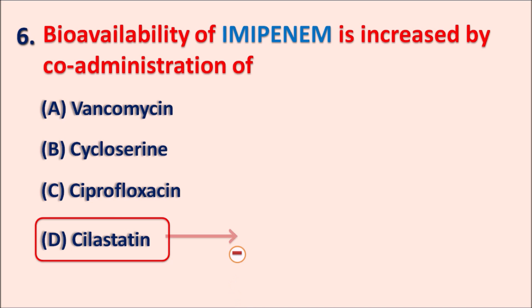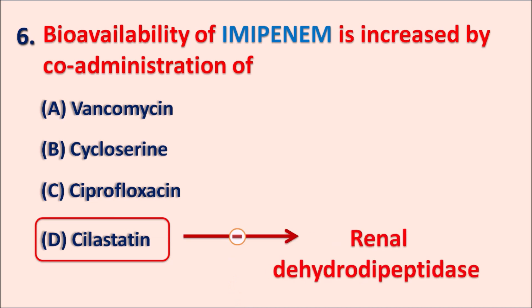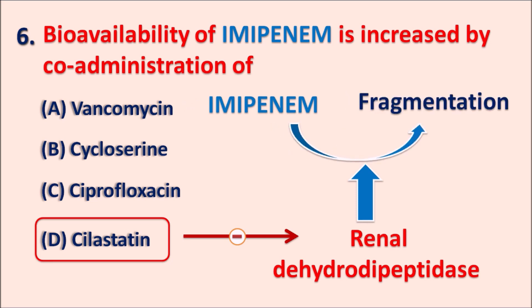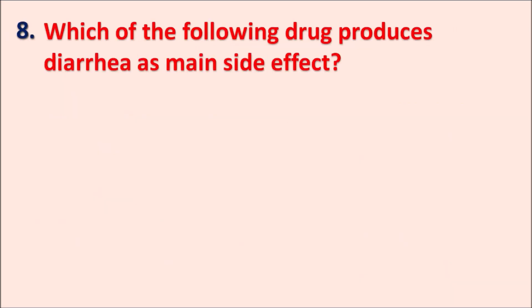Cilastatin is a drug that inhibits the renal dehydropeptidase enzyme. This enzyme acts on imipenem such that the drug is fragmented into metabolites. The renal dehydropeptidase enzyme is responsible for the breakdown of imipenem within the kidney, and this is blocked by cilastatin. So cilastatin is combined with imipenem to increase its bioavailability as well as duration of action.